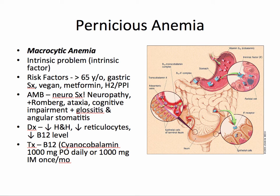In addition to the normal anemia symptoms, patients with pernicious anemia present with neurological symptoms such as neuropathy, a positive Romberg test, ataxia, cognitive impairment, in addition to glossitis — inflammation of the tongue — and angular stomatitis, which is ulceration on the sides of the mouth. These patients will have a decreased hemoglobin and hematocrit, a reduced reticulocyte count, and a decreased B12 level.